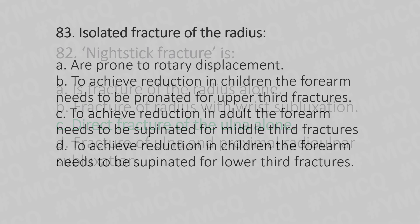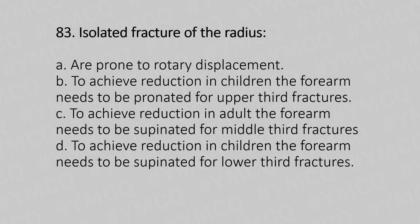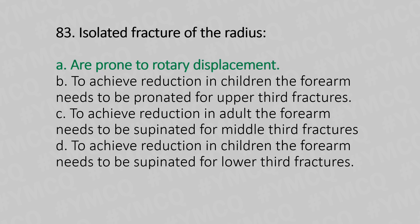Let's move to question number 83. Isolated fracture of the radius: Option A, is prone to rotatory displacement. Option B, to achieve reduction in children, the forearm needs to be pronated for upper third fractures. Option C, to achieve reduction in adults, the forearm needs to be supinated for middle third fractures. Option D, to achieve reduction in children, the forearm needs to be supinated for lower third fractures. The answer is Option A, prone to rotatory displacement.